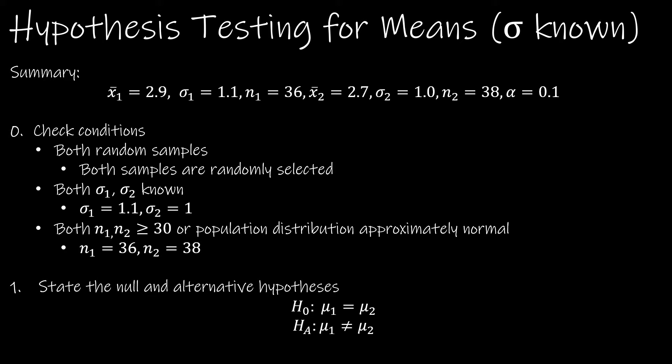Check the conditions. We are given that they're both random samples. We are also given both sigmas, and both sample sizes are greater than or equal to 30. So conditions are met. We can move forward. We've already talked about the null and alternative hypotheses.